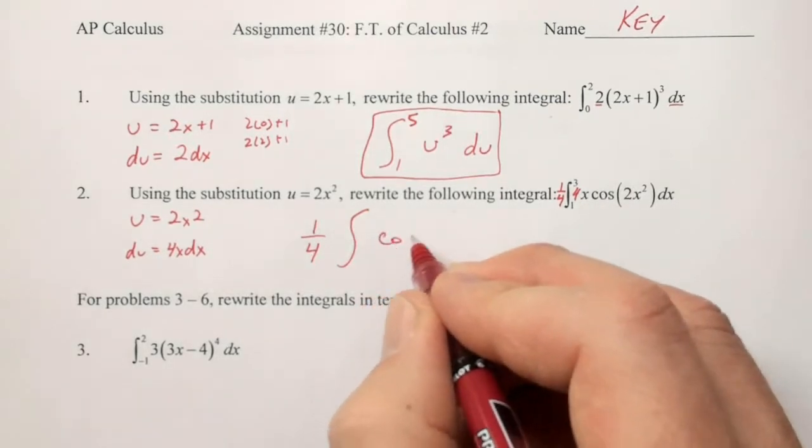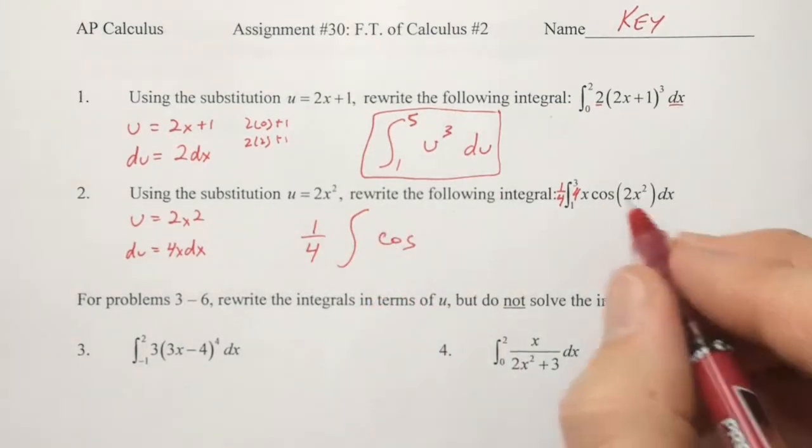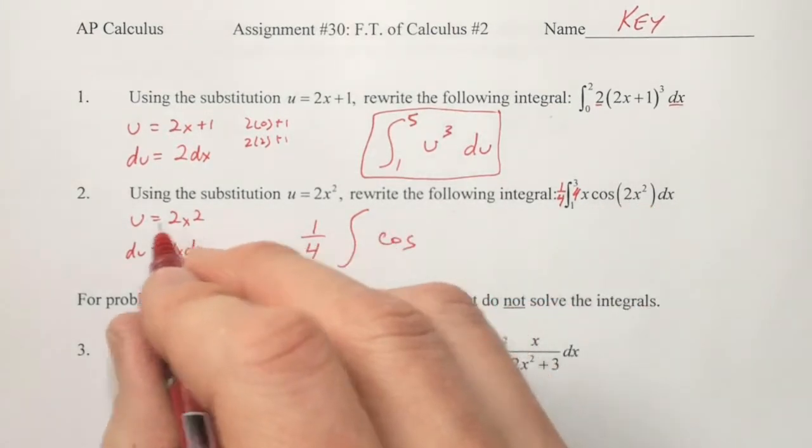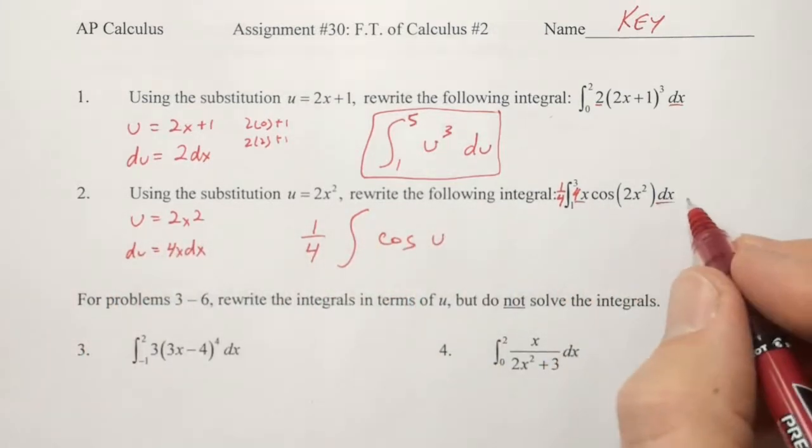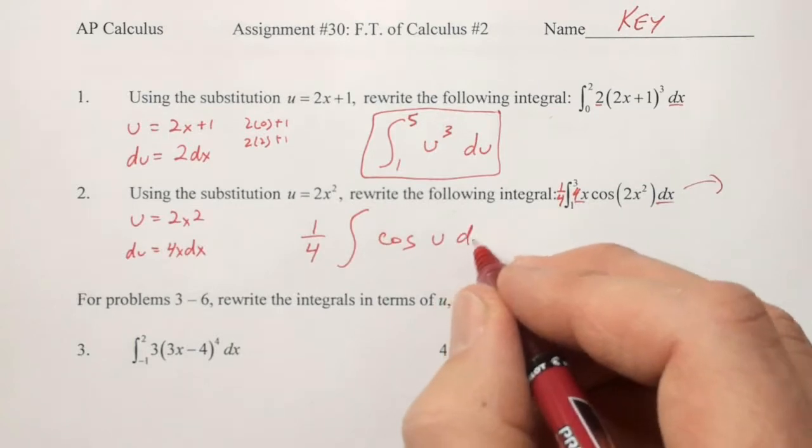Cosine was never touched, so it's still part of our integrand. 2x squared is replaced by u, so we have cosine u. The 4x and the dx are out, and du is in.